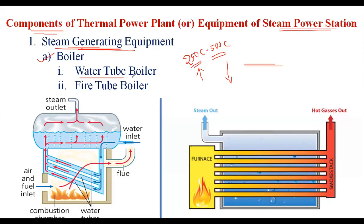In the thermal power plant, boilers are classified into two types: the water tube boiler and the fire tube boiler. In a water tube boiler, water flows through the tube and the hot gases of combustion flow over the tubes. In the diagram, you can observe water flowing inside the tube with fire surrounding it.